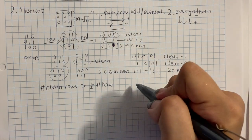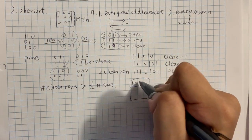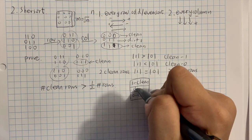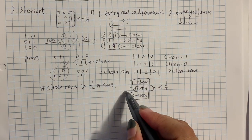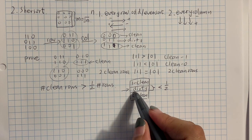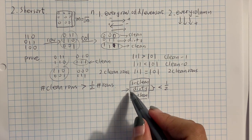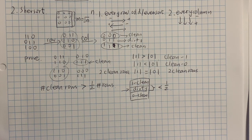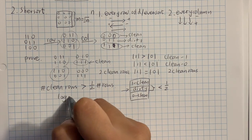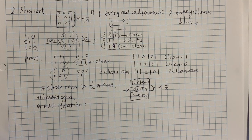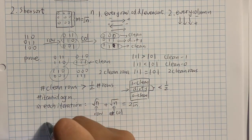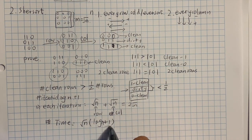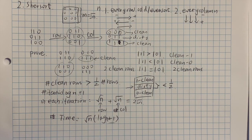After every iteration, we have all the clean-one rows here, clean-zero rows here, and dirty rows in between. The dirty portion is less than half of the rows. We can do recursion on the dirty rows again until we are left with one dirty row or no dirty row at all. Since we are halving the number of dirty rows each time, we need log n number of iterations. In each iteration, we redo the row and column operations. So in total, the runtime is square root of n times log n plus one.